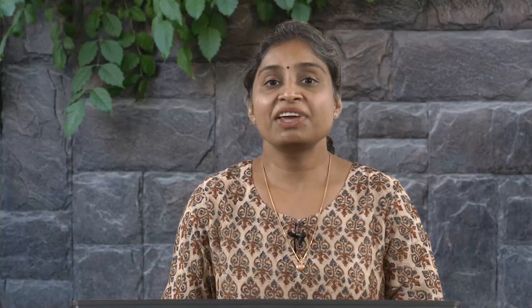After lab testing, we move to engineering classification of rocks and rock masses. I will first introduce the difference between rock and rock mass. Then we will cover the classification system for intact rock — that is the Deere and Miller classification — followed by rock mass classification systems including Rock Quality Designation (RQD), Rock Mass Rating (RMR), Rock Mass Quality Q-system, and the Geological Strength Index (GSI).